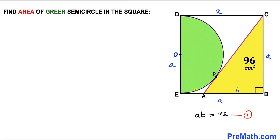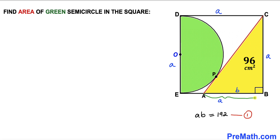Now let's make an observation. We know that the whole side length EB is A and side AB is lowercase b. Therefore, the length EA is going to be A minus b.